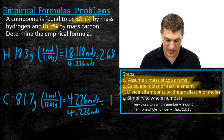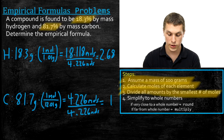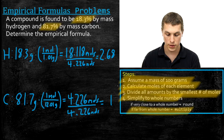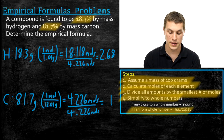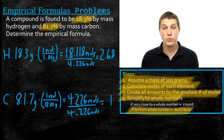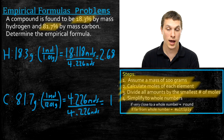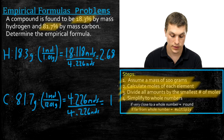The problem is that 2.68 is not close to a whole number — it's right between 2 and 3. So when we go to step four to simplify to whole numbers, we can't just round. Since 2.68 is far from a whole number, we need to multiply. We want to try multiplying 2.68 by whole numbers until we get a whole number result.